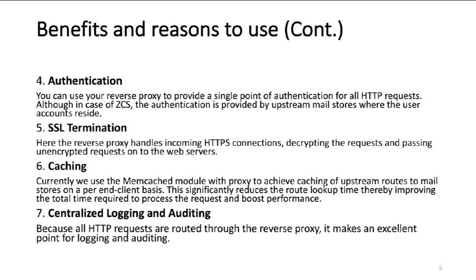Caching is currently done by memcached in Zimbra infrastructure. We use the memcached module with proxy to achieve caching of upstream routes to mail stores on a per end-client basis. This significantly reduces the route lookup time, thereby improving the total time required to process the request and boosting performance. Another advantage of Zimbra Proxy is its centralized logging and auditing capabilities. Because all HTTP requests are routed through Zimbra Proxy, it makes an excellent point for logging and auditing.